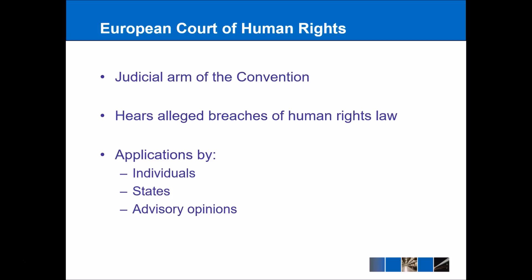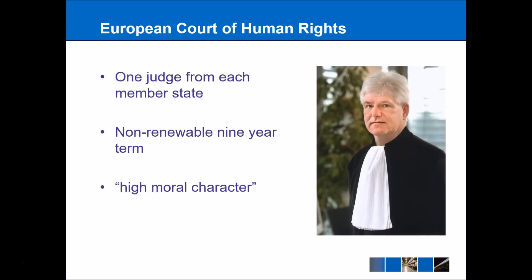Advisory opinions are also things the court can issue. If there's a particular right or issue that comes up and the court wants to give an indication on where it stands, it can do that by issuing an advisory opinion. The man on the right is Paul Mahoney, the UK judge to the European Court of Human Rights. Each member state gets its own judge. We're talking here about the Council of Europe, which is made up of about 47 member states, including places like Russia and Ukraine — much bigger than the EU. These judges serve a non-renewable nine-year term and have to be of high moral character, normally with previous judicial experience within their own country.